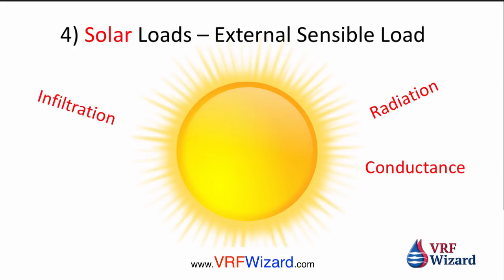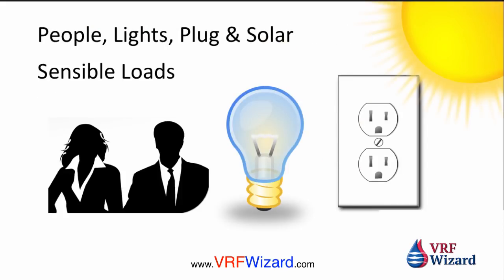The fourth contributor is the solar load — that external sensible load. We're only going to deal with sensible heat, which includes radiation and conductance. We also have infiltration, which brings in some sensible load, but it's a small amount — it leaks in through doors and window cracks. Newer buildings are tighter, so we're not going to cover infiltration. The four major loads are: people, lights, plug loads, and solar.